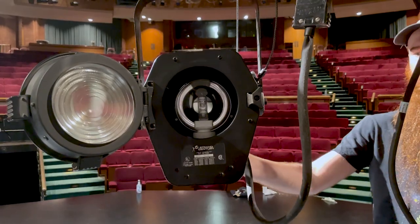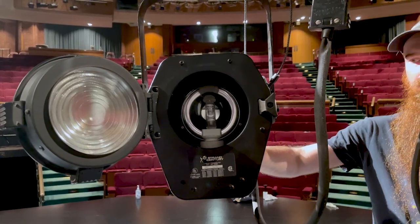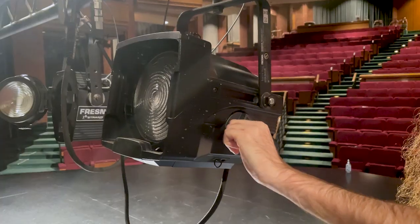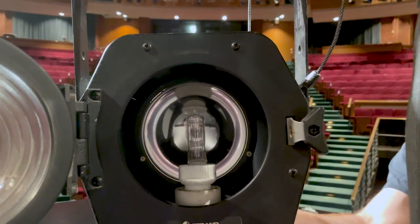The beam angle on Fresnels can be changed from spot to flood by a mechanism that moves the lamp and reflector in relation to the lens. On the Source 4, it is a knob on the side of the unit, while on the Strand it is a lever on the back.